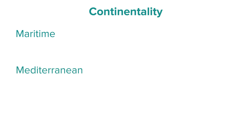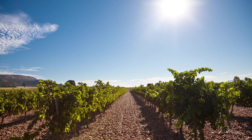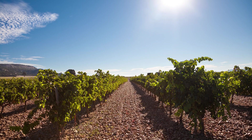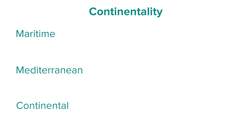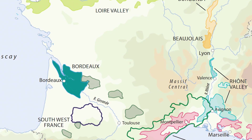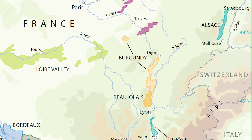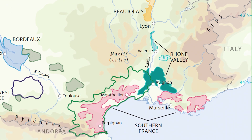Mediterranean climates also have low continentality, being close to large bodies of water, but are warmer with dry summers, so they don't share the same rainfall risks. However, drought can be an issue. Continental climates have much less humidity during the growing season — warmer, drier and sunnier — allowing grapes to ripen in the shorter growing season, though drought can also be a concern. Within France, Bordeaux is a maritime climate, Alsace and Burgundy are continental, and the Southern Rhône and Languedoc are Mediterranean.